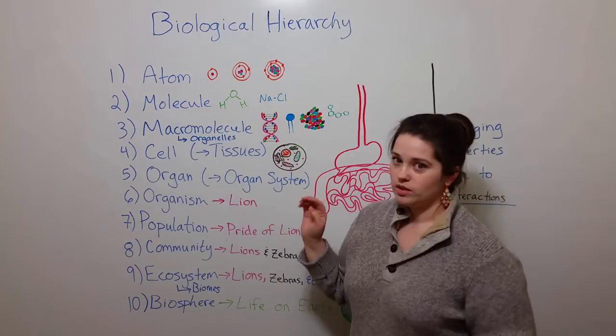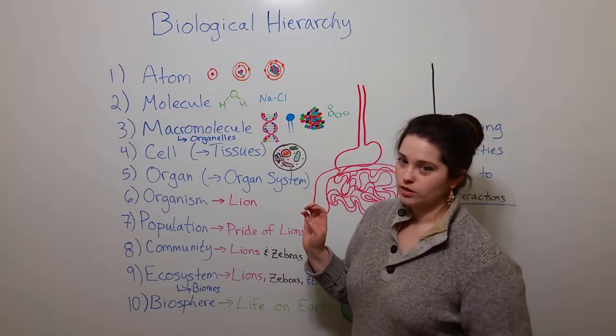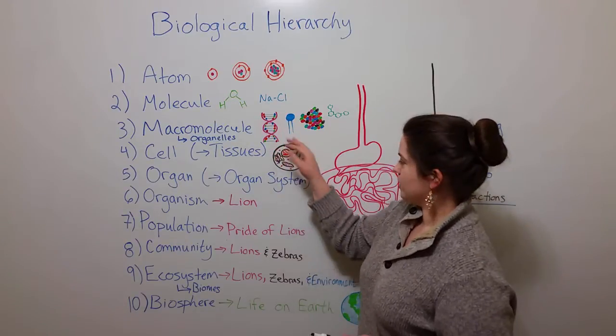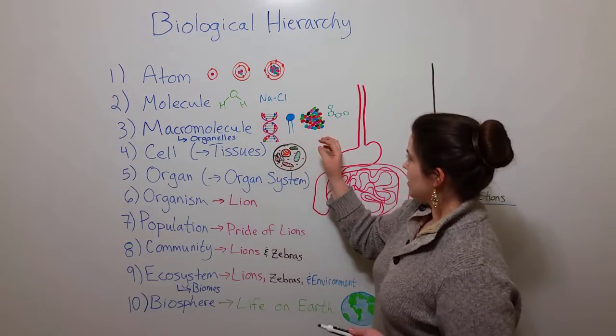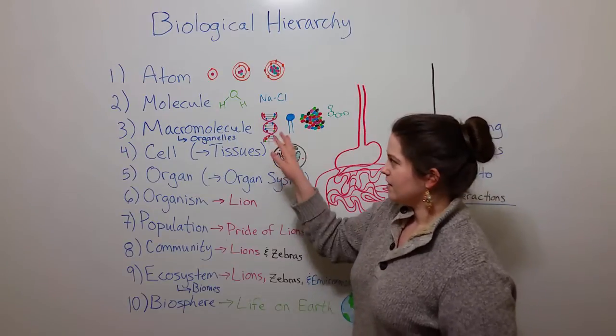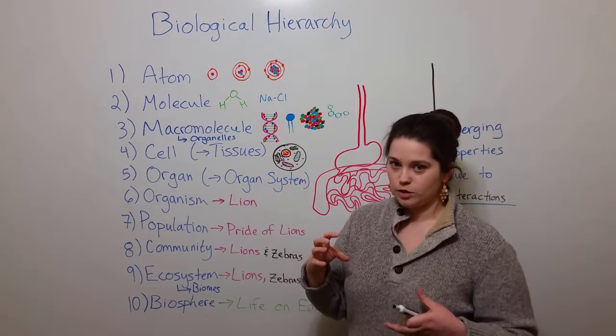Then molecules can interact together to form macromolecules. For example, things like DNA or RNA, which is not pictured here, phospholipids, proteins, carbohydrates, and even these macromolecules are also made of smaller units.